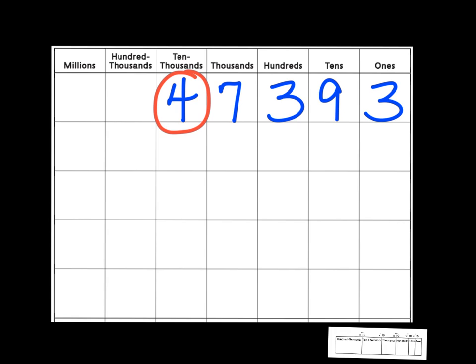Well, first of all, I'm going to look to see what column is it in. It's in the 10,000's place, so that means that that 4 is worth 10,000. So if I had 10,000 4 times, that would be 40,000. So that particular digit is worth 40,000. Let's do another one. Make it just a little bit bigger.